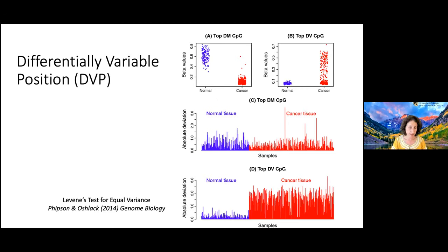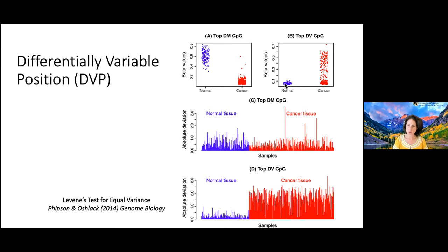Another analysis is differentially variable positions (DVPs). Sometimes methylation changes are subtle — only a percent or two — and you don't see a big mean difference. In cancer, for example, the average methylation between normal and cancer tissue may be similar, but in cancer some samples show much greater variability, very different from the mean. That's what a DVP captures: the variability is different between groups even when the average is similar. There are statistical tests for equal variance specifically designed for this kind of analysis.